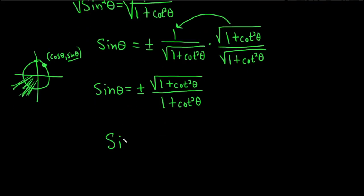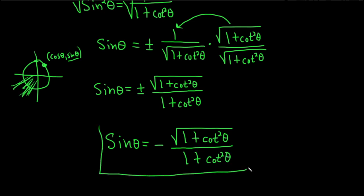So the solution is sin θ = -√(1 + cot²θ)/(1 + cot²θ). That's the final answer. I hope this video has been helpful. Good luck.